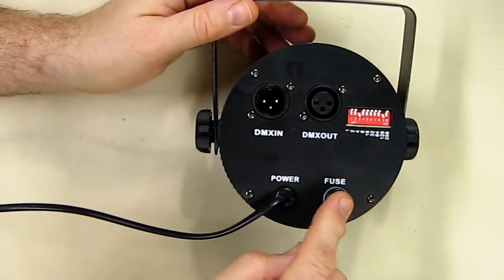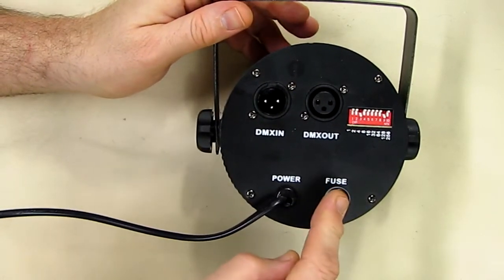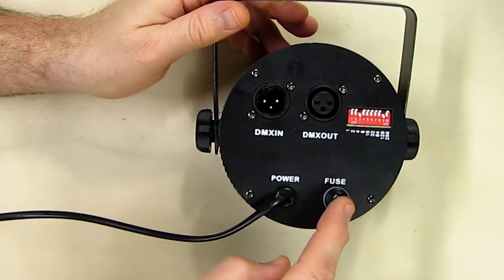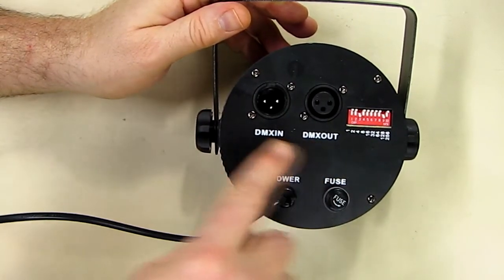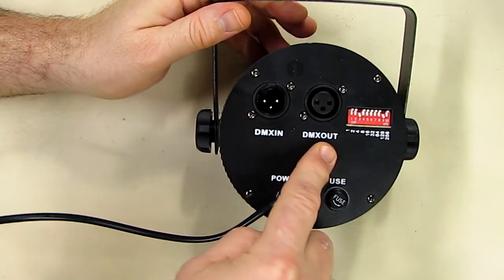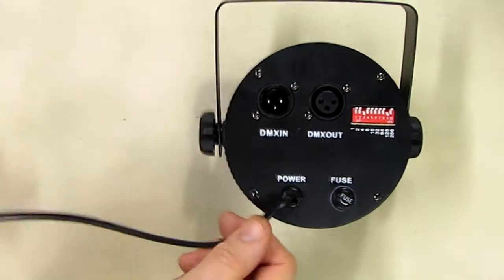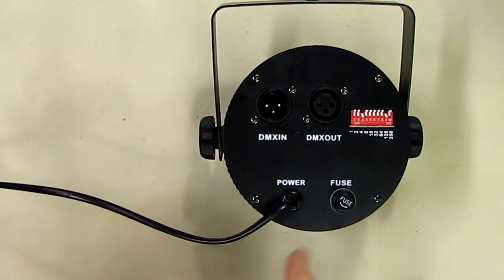It has a 120 volt amp fuse on here, probably one amp fuse, and you've got DMX in and DMX out, and your power cable looks to be three and a half feet long.